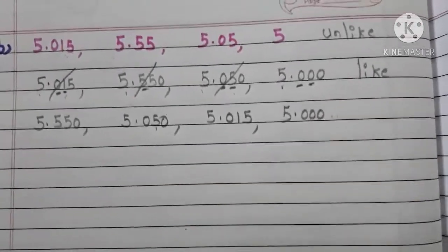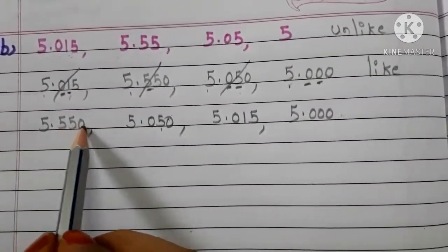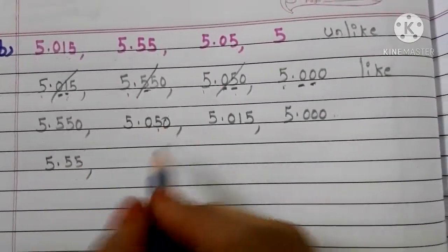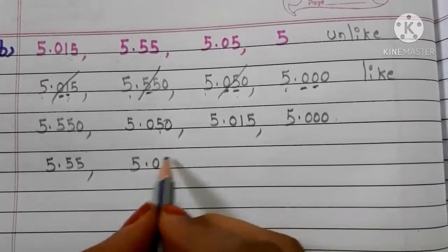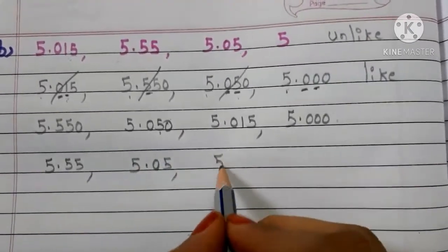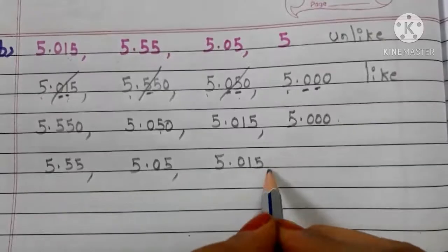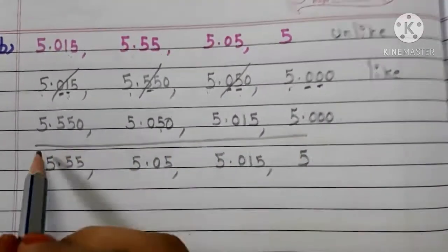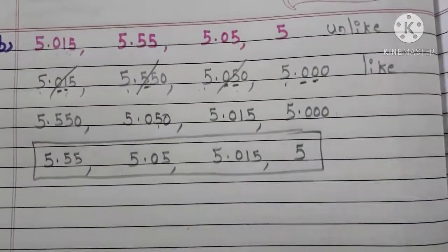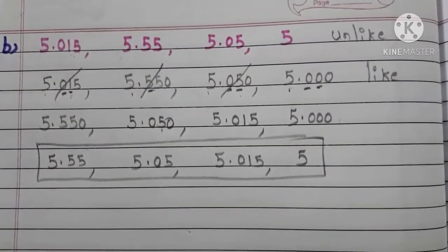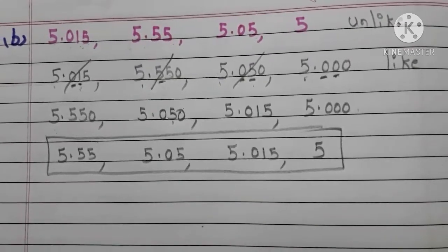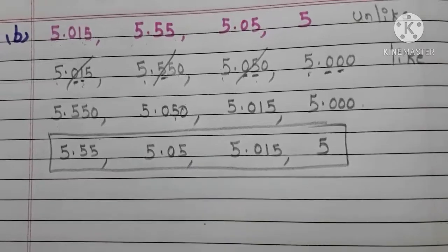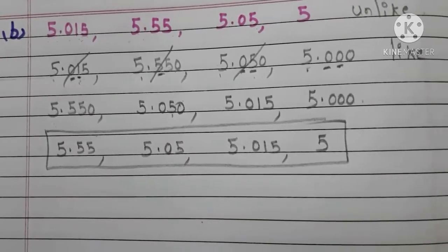Write according to the question: 5.550 means 5.55, 5.050 means 5.05, copy down 5.015, and 5.000 means 5. So this is the descending order of the given decimals. I hope this video is very helpful to you. If you like my video, please like, share, and subscribe, and don't forget to click on the bell icon. Thank you.